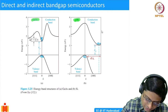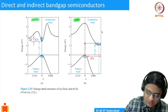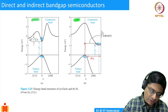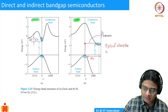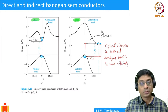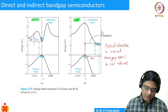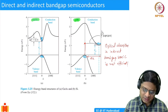In indirect band gap semiconductors, absorption is not efficient because a photon has negligible momentum. A photon can only make a vertical transition in E-k space. For an indirect transition involving a change in k, an additional phonon is required to conserve momentum. This is a second-order process, making optical absorption in indirect band gap semiconductors less efficient.